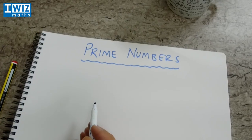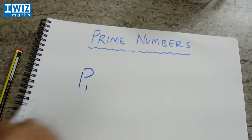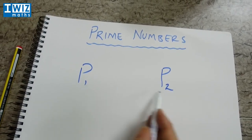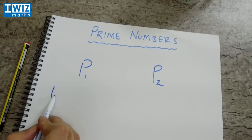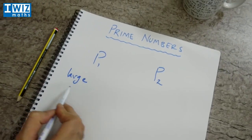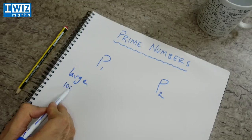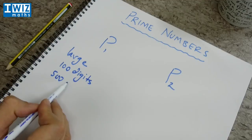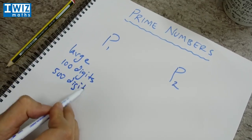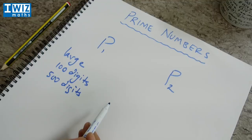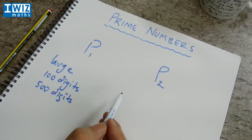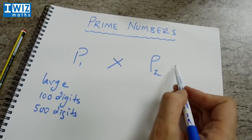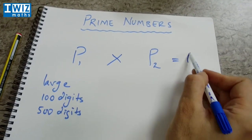Let's consider two prime numbers. We have P1 as one prime number and P2 as another prime number. Let's assume that both of these are actually large prime numbers — maybe they are a hundred digits large or they might even be 500 digits large. These are really large prime numbers. What we're going to do is multiply the two together: P1 times P2, and let's assume we get a number M.